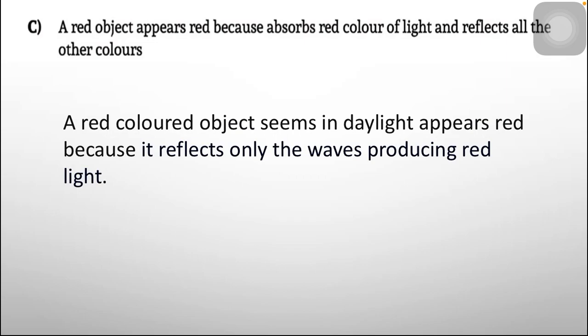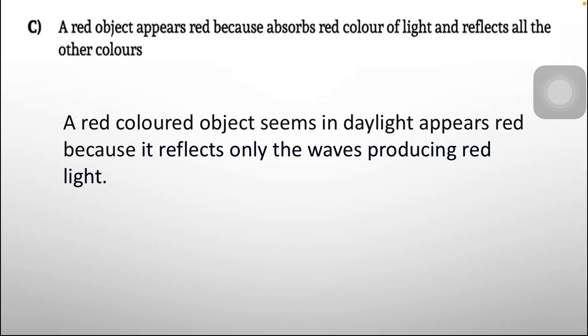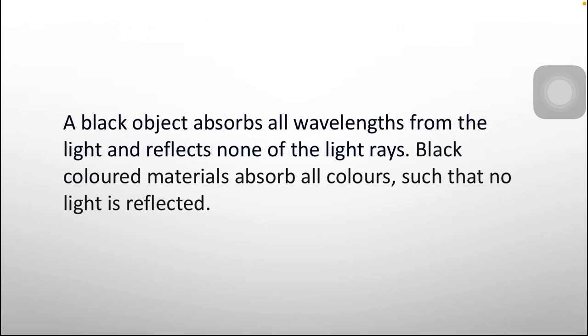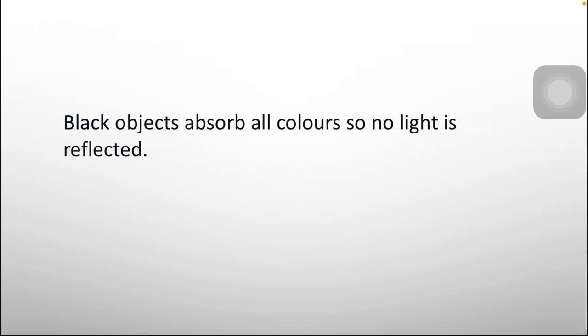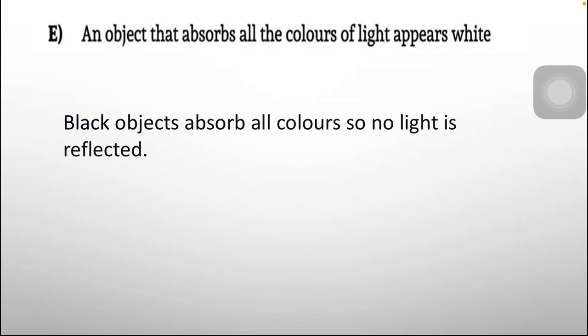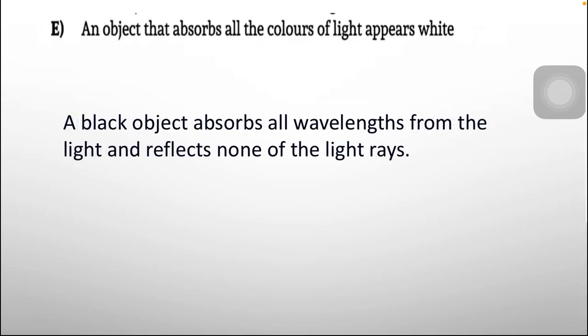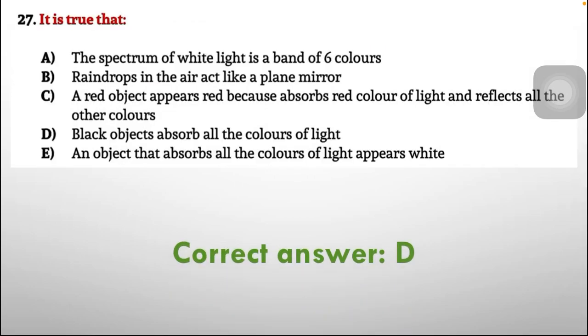A red object appears red because it reflects only the wavelengths producing red light — so option C is incorrect. Option D — a black object absorbs all colors of light, so no light is reflected — that is correct, and this is our answer. Option E — an object that absorbs all colors appears white — is incorrect, since black objects absorb all colors. The correct option is D.